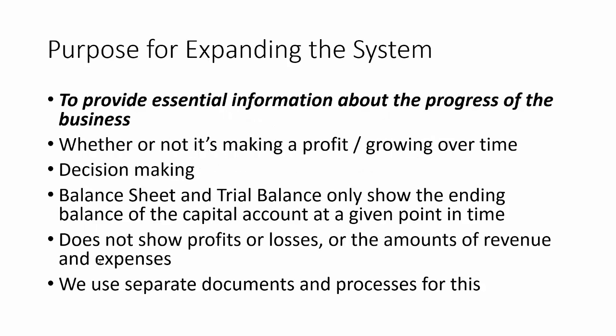The purpose of the expanded system is to provide essential information about the progress of the business. Progress is measured in two main ways: the profit and the trend of profit over years, and the value of the business - the owner's equity. We want to know: is it making a profit from year to year? Is that profit growing or shrinking? The balance sheet and trial balance only represent the business at a given point in time, whereas profit and loss represents a period of time.